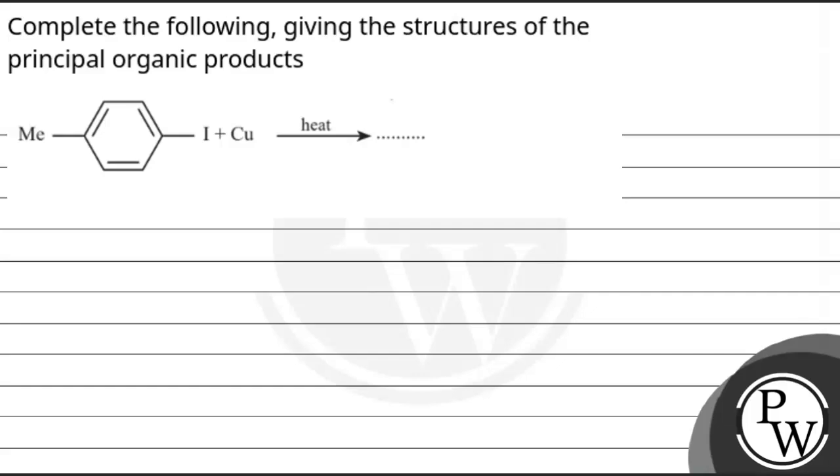Hello guys, in this question we need to complete the following, giving the structures of the principal organic products. Here we have a reactant that is para-iodotoluene. When we treat it with copper and heat,